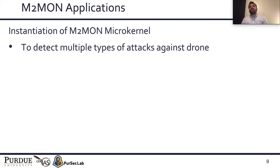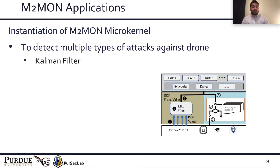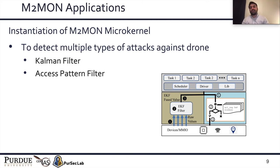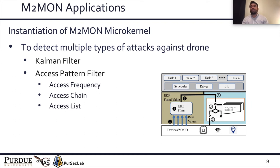We instantiated the M2Mon microkernel to implement multiple applications so that we can detect different types of attacks. The first application was a Kalman filter, used to model the physical world. This Kalman filter is similar to the one implemented inside the flight control software itself, but it enjoys all the isolation guarantees of M2Mon. Next, we implemented an access pattern-based filter that can track IO access frequency, track IO access sequences, and block accesses to different IO regions.